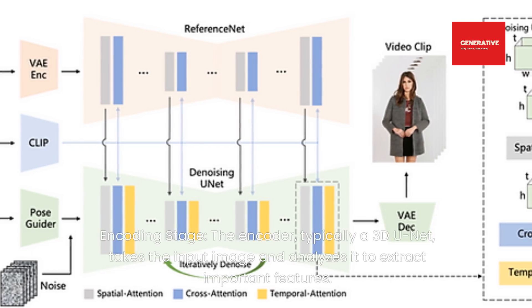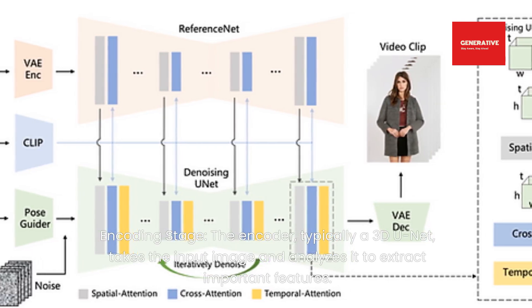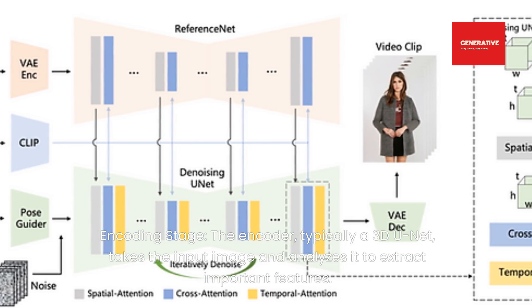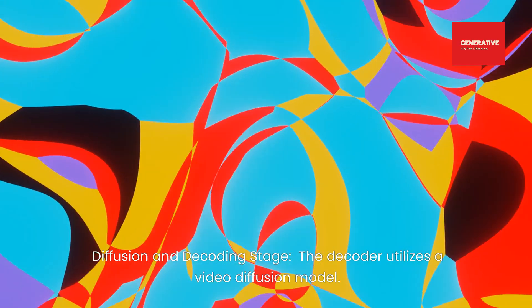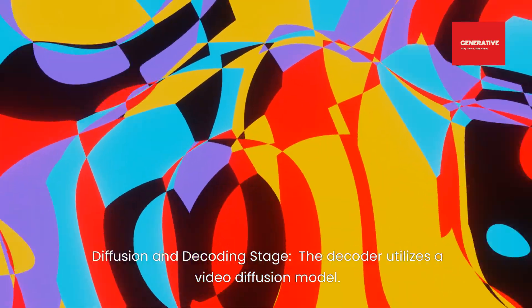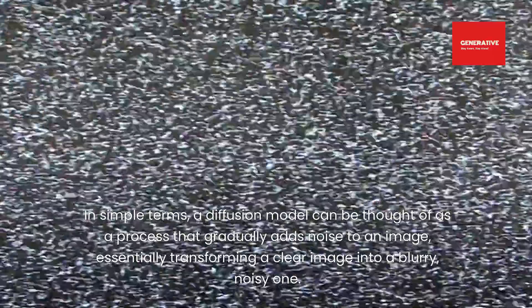Recent advancements in image-to-animation leverage a type of model called a 3D U-Net video diffusion model. This model can be broken down into two stages. In the encoding stage, the encoder — typically a 3D U-Net — takes the input image and analyzes it to extract important features. In the diffusion and decoding stage, the decoder utilizes a video diffusion model, which gradually adds noise to an image, essentially transforming a clear image into a blurry, noisy one.